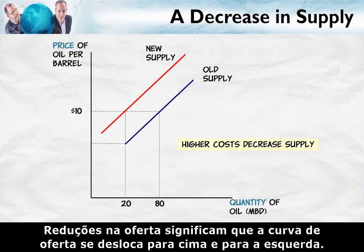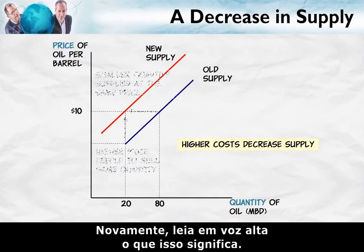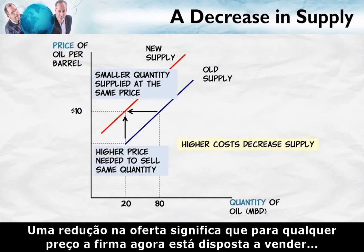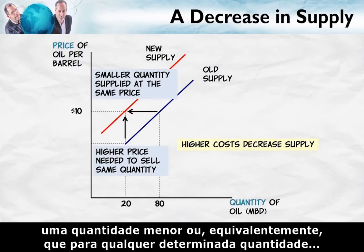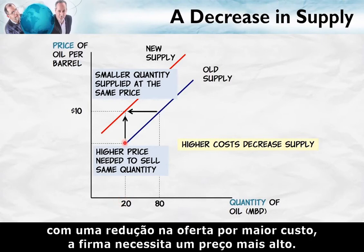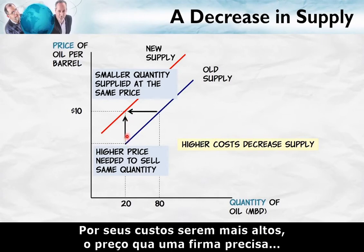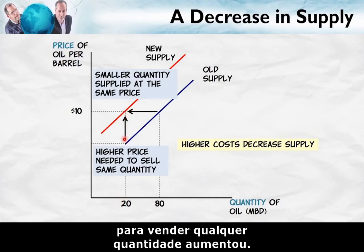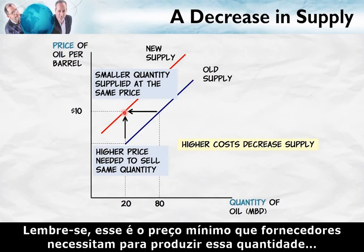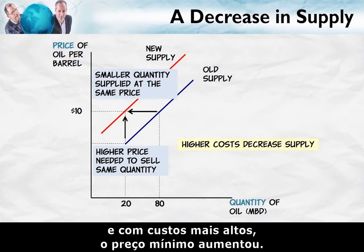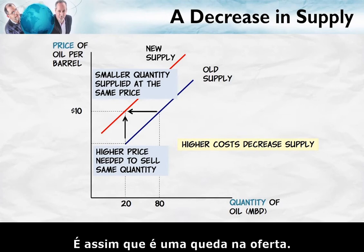Reductions in supply mean that the supply curve moves up and to the left. A reduction in supply means that at any price, the firm is now willing to sell a smaller quantity. Equivalently, for any particular quantity, with higher costs, the firm needs a higher price. Because their costs have gone up, the minimum price the firm requires to sell any particular quantity has increased. With higher costs, that minimum price has gone up — that's what a decrease in supply looks like.